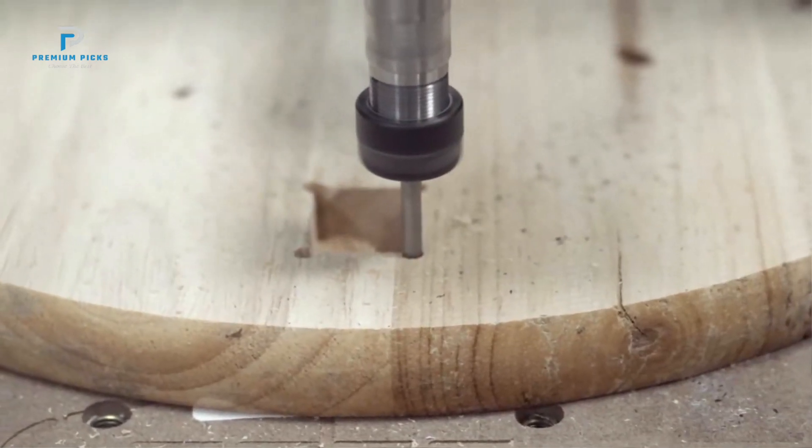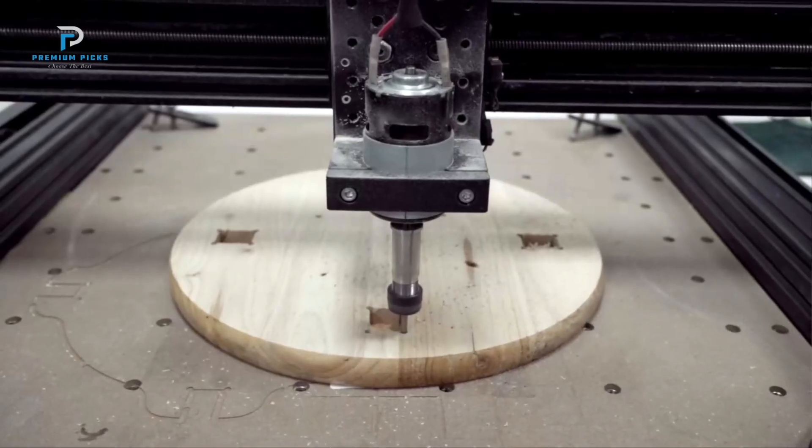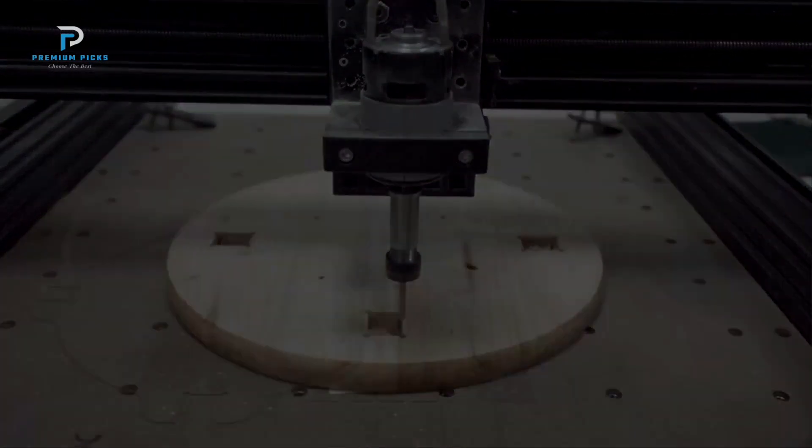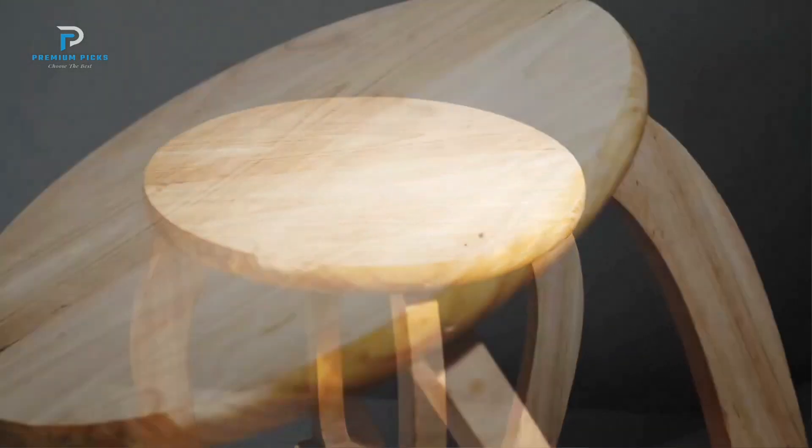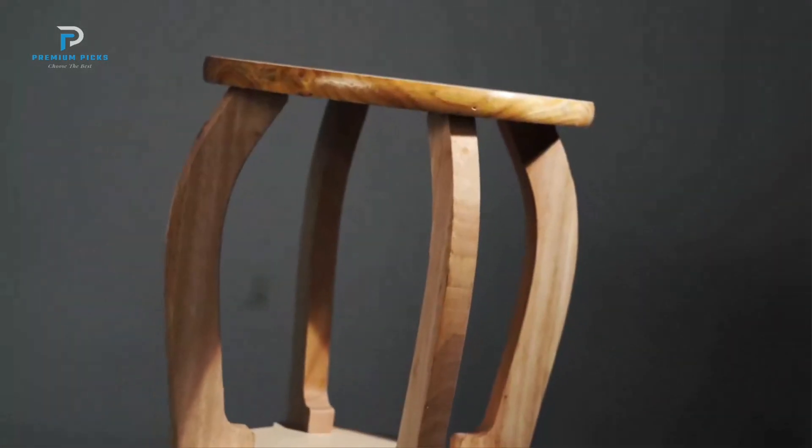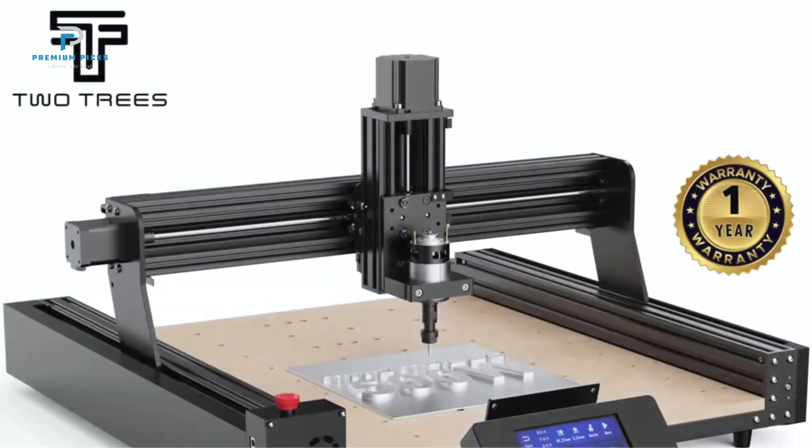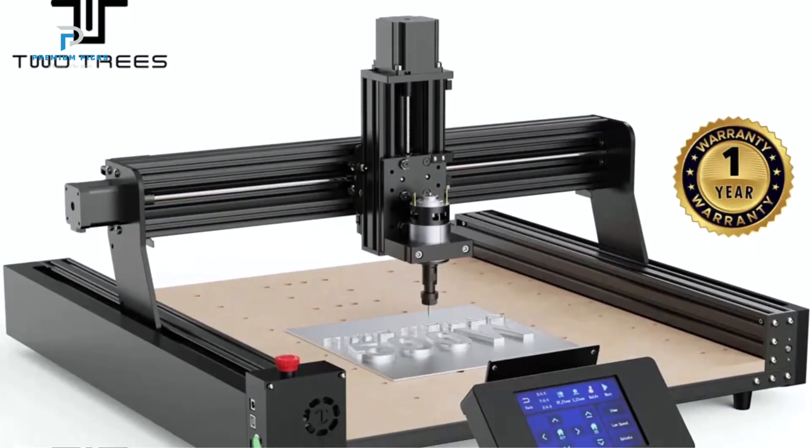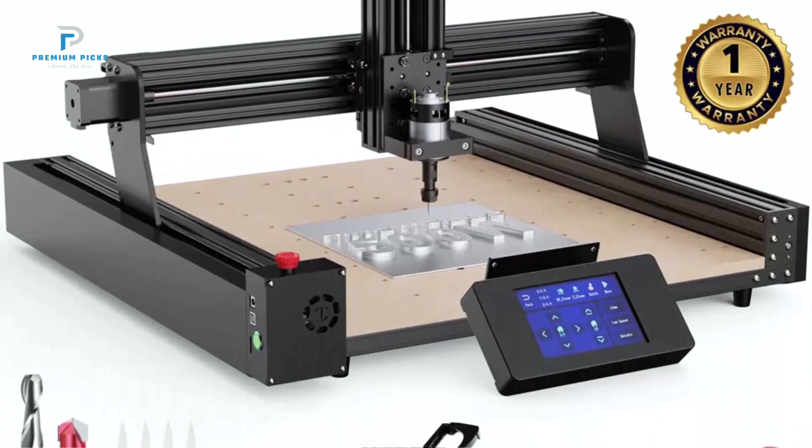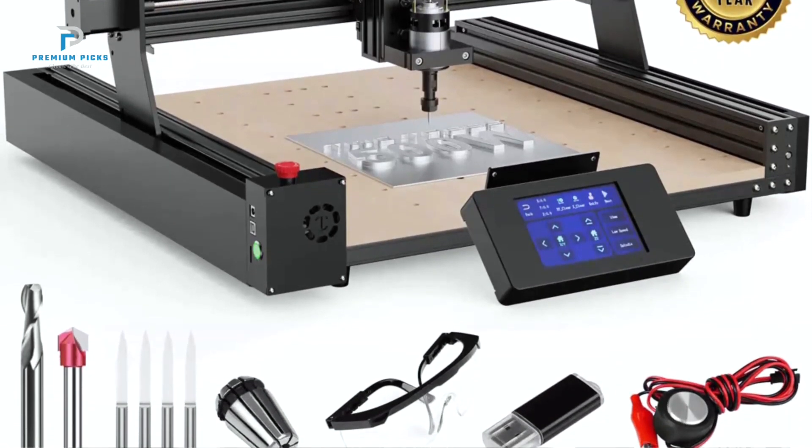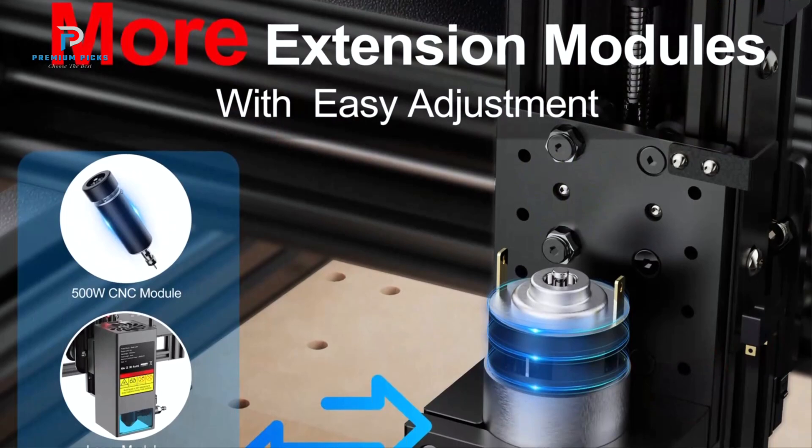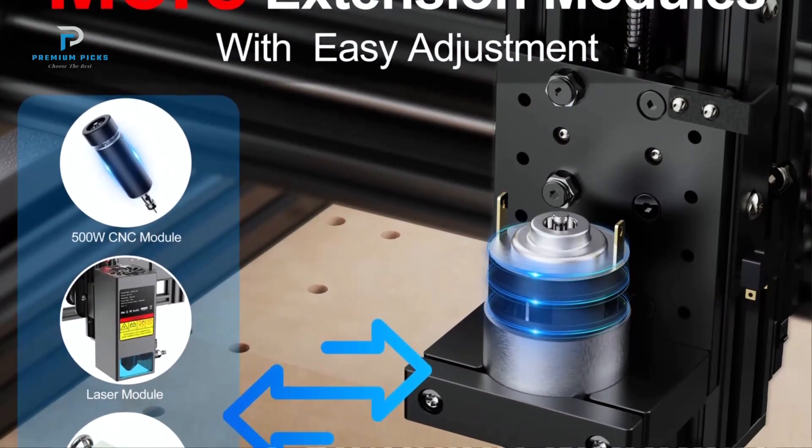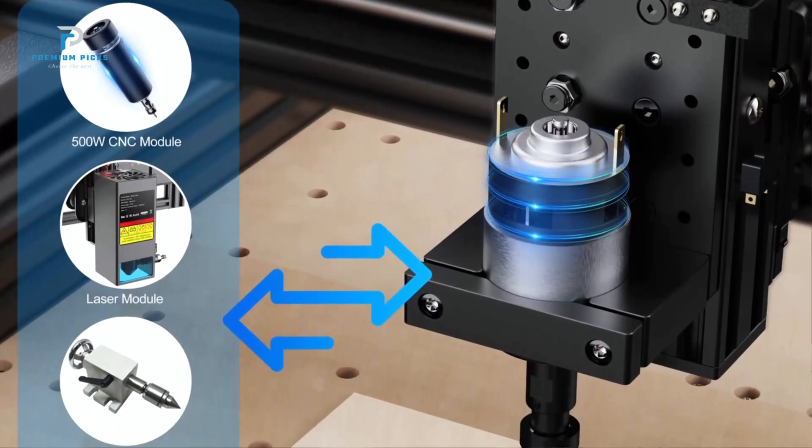Powerful 775 Spindle and Rigid Structure. The Two Trees TTC450 is equipped with a powerful 775 spindle that ensures high performance for various engraving and cutting applications. The rigid H-beam structure, combined with the lead screw-driven Y-axis dual screw drive and Z-axis optical axis drive, delivers stability that outperforms traditional V-slot drives. This means you can expect precise cuts, even on tougher materials.